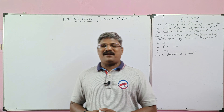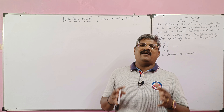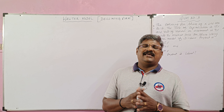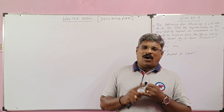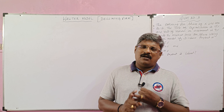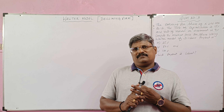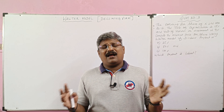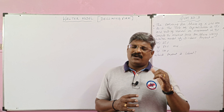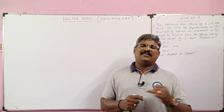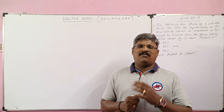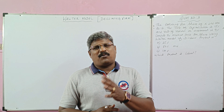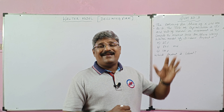Students, we are learning financial management. In financial management, we have one important chapter called dividend policy. In dividend policy, there are three models: namely Walter model, Gordon model, and M&M model. As far as Walter model is concerned, we completed two problems — one in relation to the growth firm, another in relation to the normal firm. In the third part, we are going to learn the problem in relation to the declining firm.